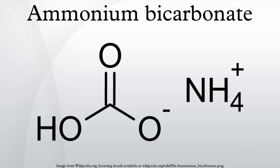Ammonium bicarbonate is produced by combining carbon dioxide and ammonia: CO2 + NH3 + H2O → NH4HCO3. Since ammonium bicarbonate is thermally unstable, the reaction solution is kept cold, which allows the precipitation of the product as a white solid. About 100,000 tons were produced in this way in 1997.